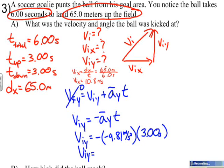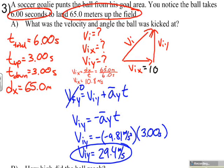Our viy works out to be 29.4 meters per second. So, now I'll go up to my diagram here. I'm just going to label my vix as that 10.8 meters per second that we found it to be, and my viy is 29.4 meters per second.